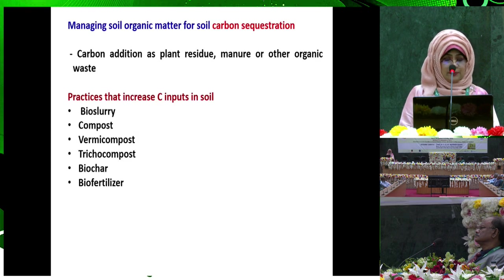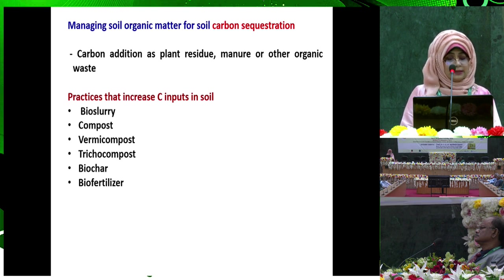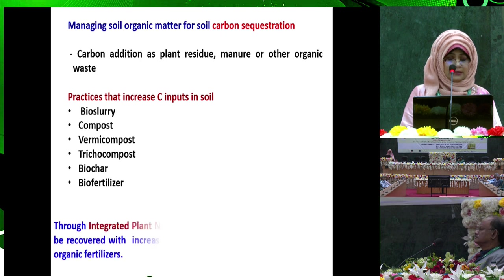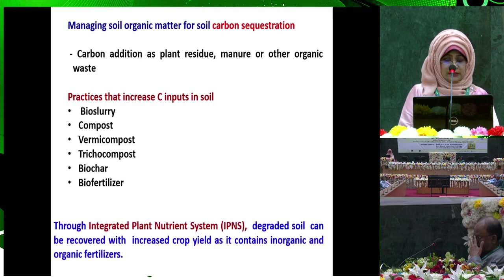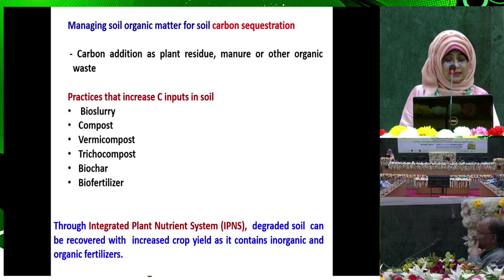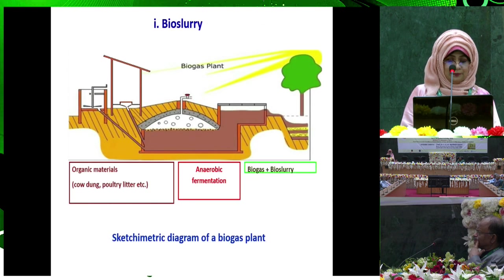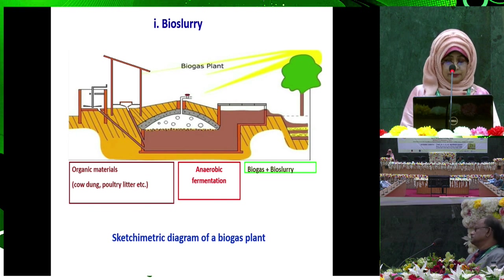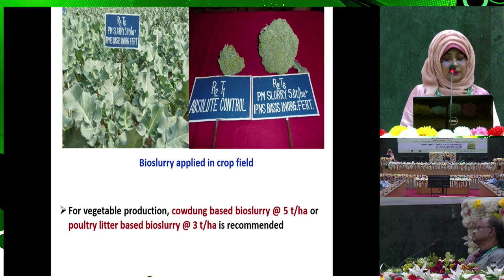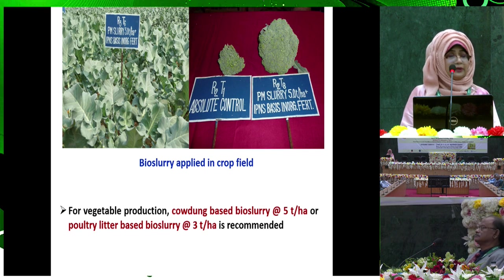Organic manure management: managing soil organic matter for soil carbon sequestration. Practices that increase soil carbon include biosolary compost, vermicompost, tricocompost, biochar, and biofertilizer. Through the integrated plant nutrition system (IPNS), degraded soil can be recovered with increased yields as it combines inorganic and organic fertilizer. For vegetable production, cow dung-based biosolary at 5 tons per hectare or poultry litter-based biosolary at 3 tons per hectare is recommended.